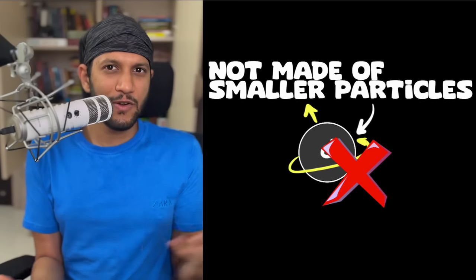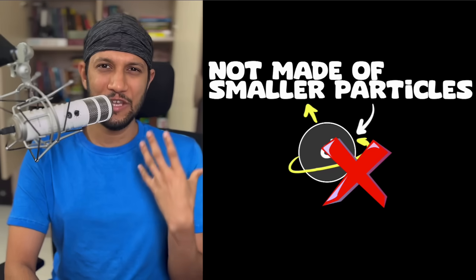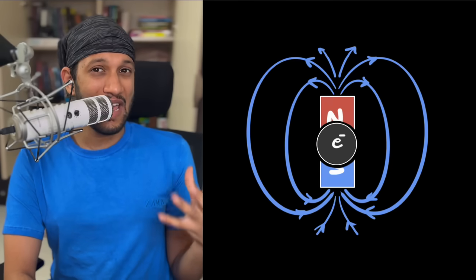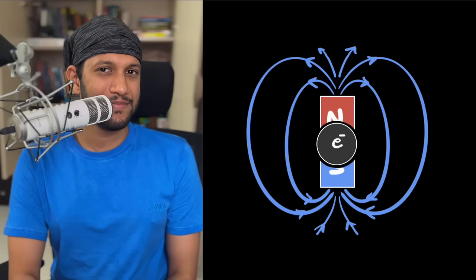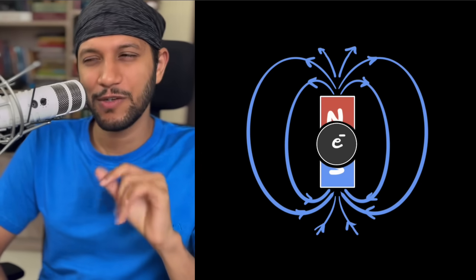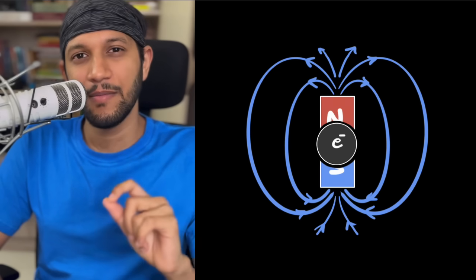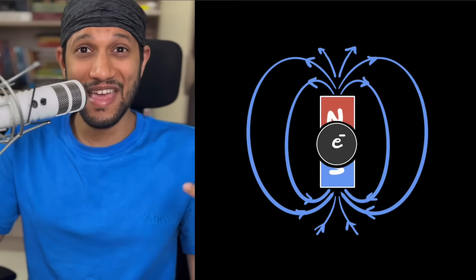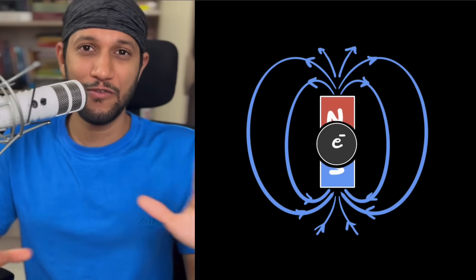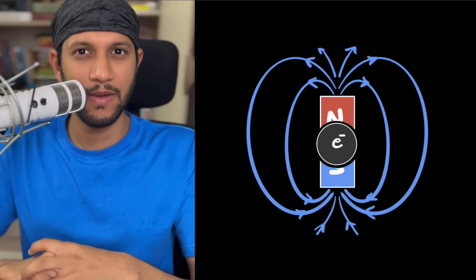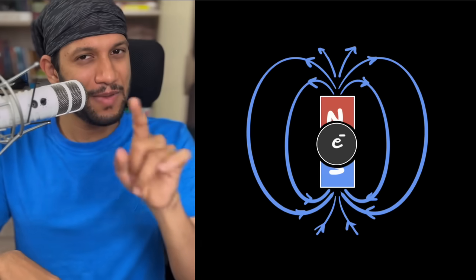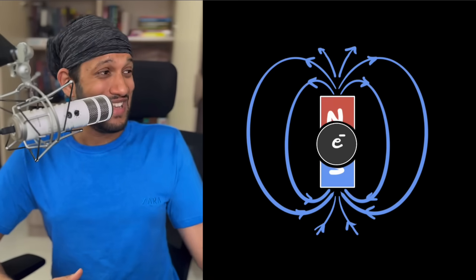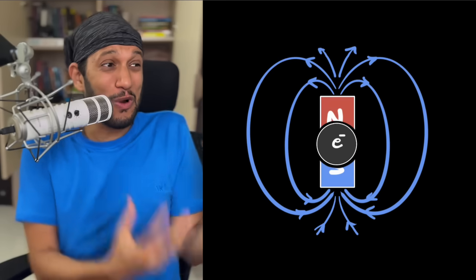But now I ask Feynman, then if electrons don't spin, why do we act and talk as if they do? Well, Feynman says, because of one important fact. Electrons behave like tiny magnets. They produce magnetic fields. Now at this point, I would pause and I would tell Feynman, I know what you're trying to do. There is a saying that if you can't convince them, confuse them. And so Feynman, what has this fact, that electrons behave like tiny magnets, have anything to do with what we are talking about, spin?